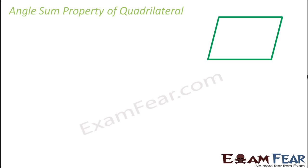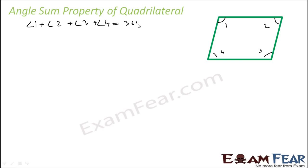Let's start with the first property called the angle sum property of a quadrilateral. It is observed that the sum of angles in a quadrilateral is 360 degrees. We have four angles in a quadrilateral — angle one, two, three, and four. If you add all four angles, what you get is 360 degrees. You can try this on your own: draw any kind of quadrilateral, take a protractor, measure all the angles, and you will see that the sum is 360 degrees.